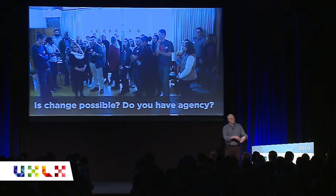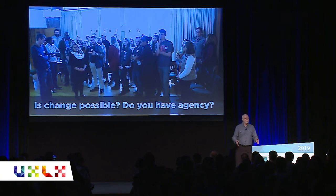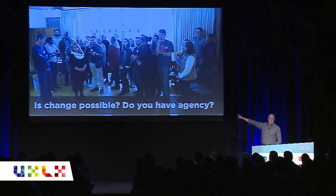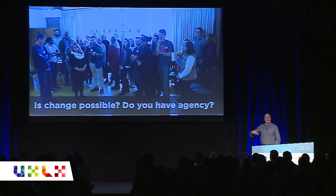One of the last things we did: at the beginning of the event, we had an imaginary axis on the floor. We said: here, change is absolutely possible; down there, there's no way it'll change. Stand where you think you are. And: I have agency to effect change on this campus — stand yes or no. At the end of the second day, people were crowding up against the yes wall. A real, physically manifest hope — not optimism or pessimism, but actionable hope.